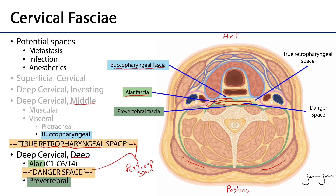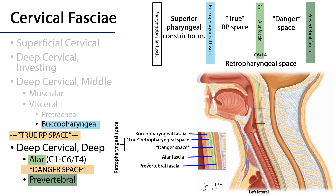This will look a little better when we see it in a sagittal section. Anteriorly here is the buccopharyngeal fascia coming down, and then the alar fascia is behind that, but between the two is that true retropharyngeal space. Behind the alar fascia is the danger space, and the posterior border of the danger space is the prevertebral fascia.